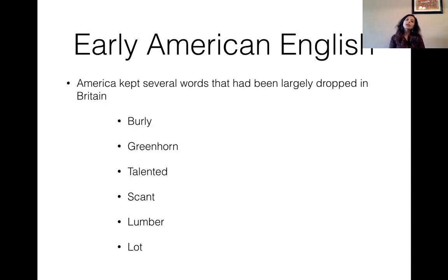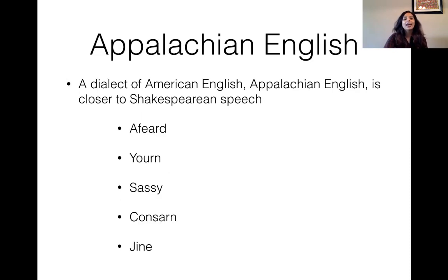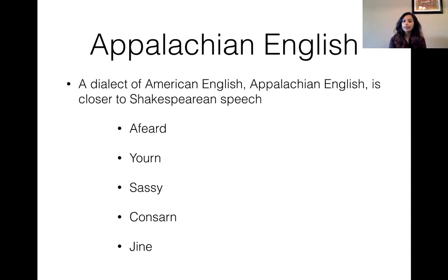America also kept a lot of words that have been largely dropped in Britain — things like 'burly,' 'greenhorn,' 'talented,' 'scant,' 'lumber,' and 'lot.' There's also a dialect called Appalachian English, spoken in the Appalachian mountains, which is actually closer to Shakespearean speech. It's often treated as a different dialect of American English, but with definite ties to early modern American English rather than modern English, and you have a lot of words there that really look like they are from the early modern English era.